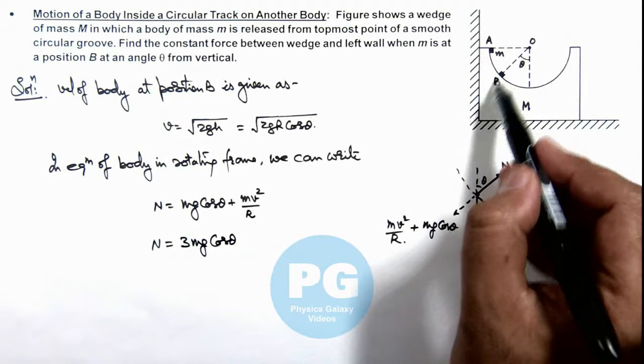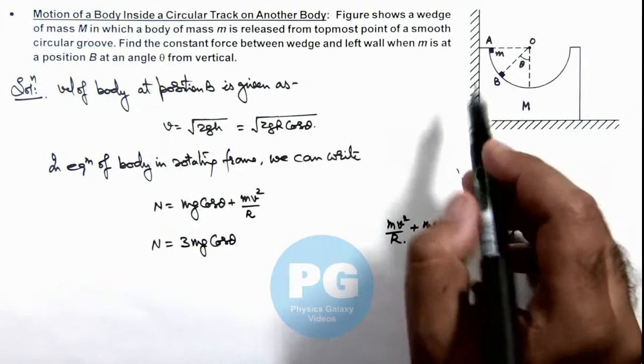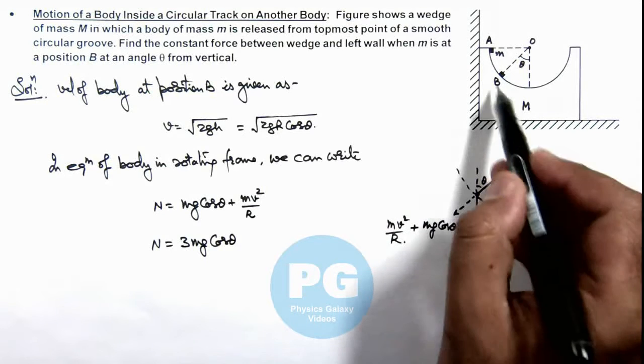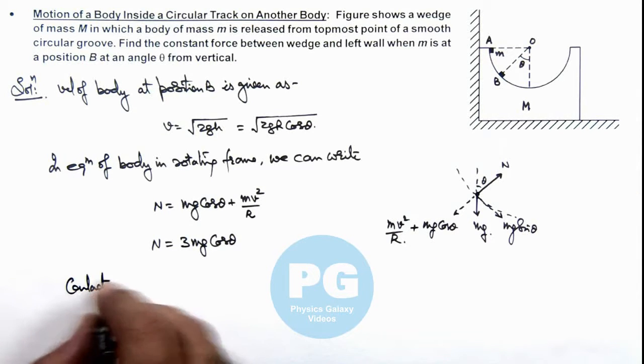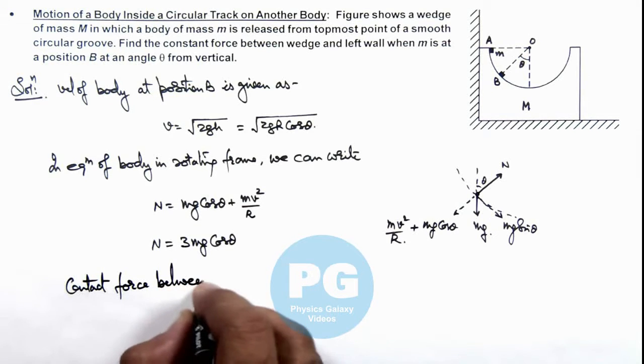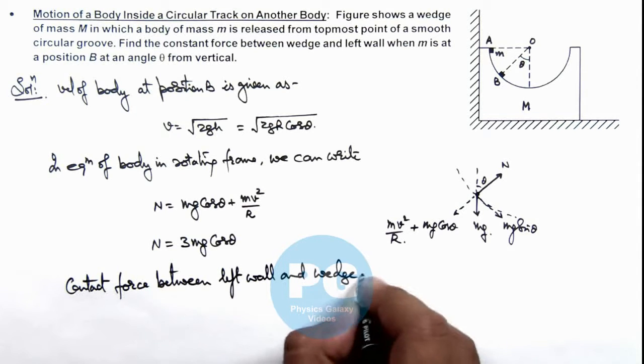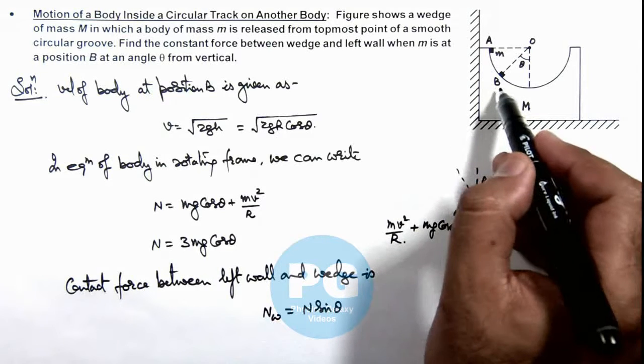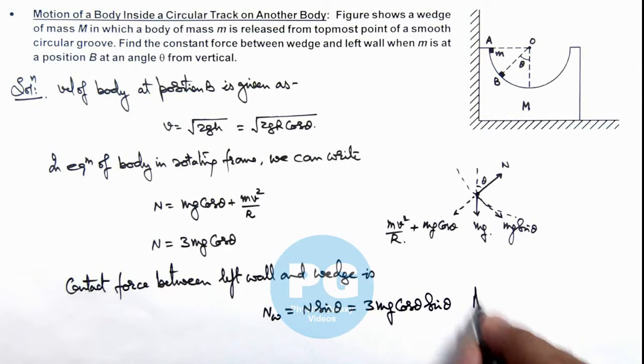The same normal reaction will also be acting on the wedge block. If we look at the force acting on wall due to the wedge or the contact force between wall and wedge, that must be balancing the horizontal component of this N which is applied by body on this wedge. So we can write the contact force between left wall and wedge, Nw is equal to N sin theta as it is acting at an angle theta from the vertical, so horizontal force will be N sin theta and this is equal to 3mg cos theta sin theta, that will be the final result of this problem.